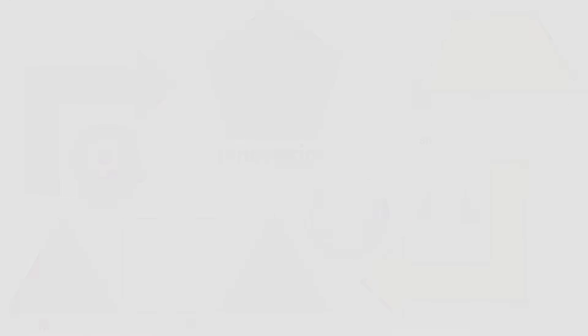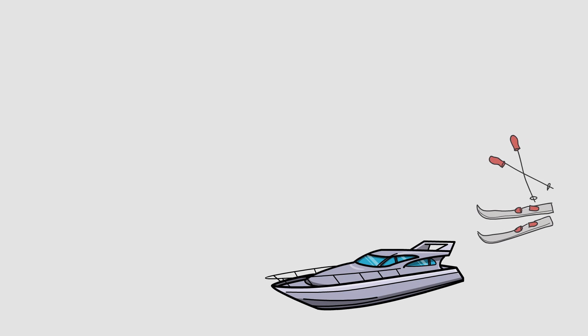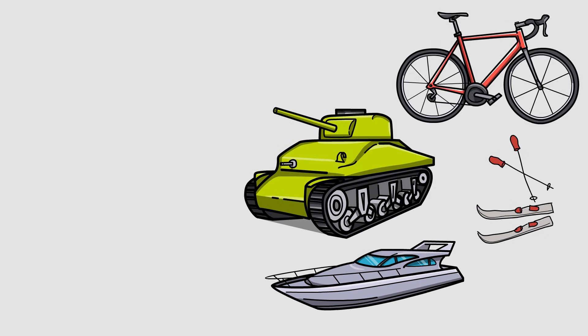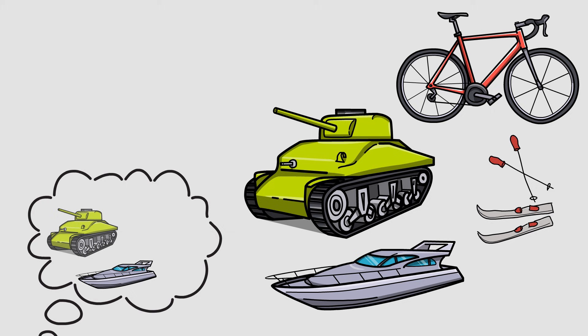I think the following example will give you a good idea of what first principle thinking is all about. Imagine you have a motorboat with skiers behind it, a military tank, and a bicycle. What most people would think if they see those things is exactly what they are: a motorboat, a tank, or a bicycle.